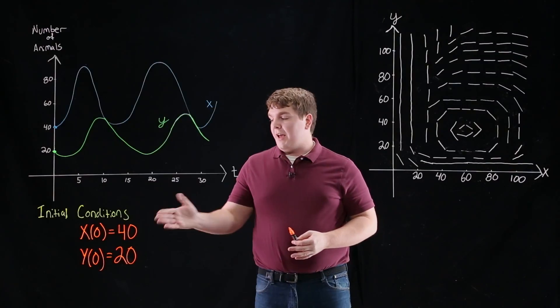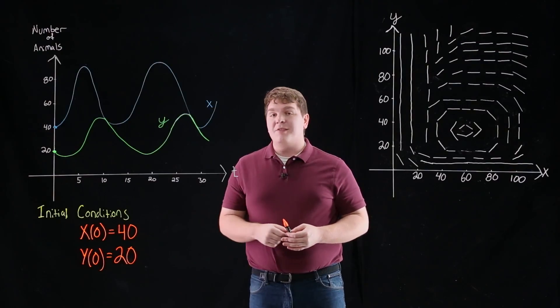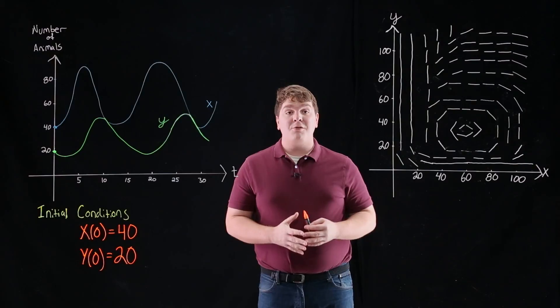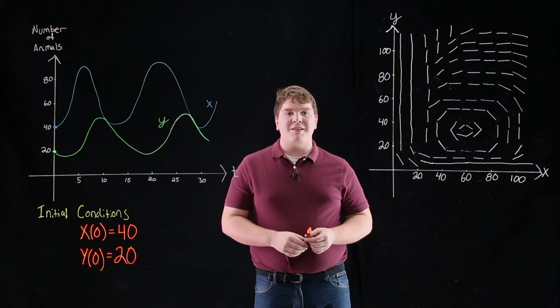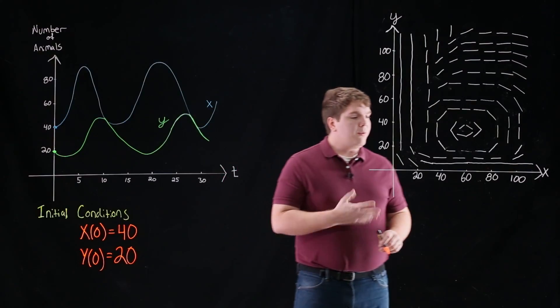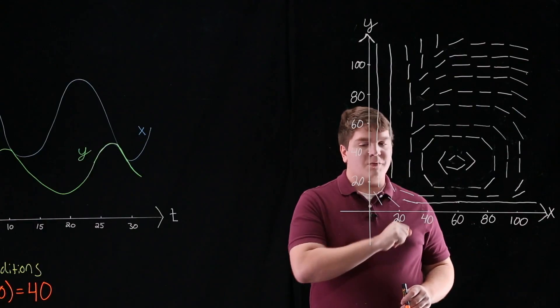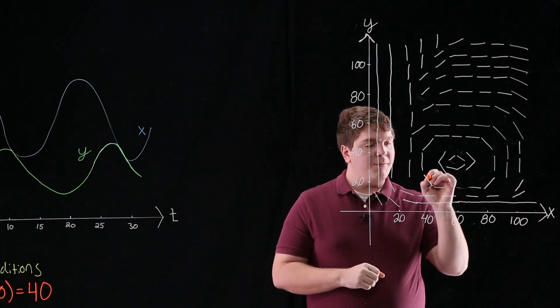Now that we've found our initial conditions, x equals 40 and y equals 20, we can sketch the solution on our slope field which passes through these initial conditions. So like we found, x equals 40 and y equals 20.